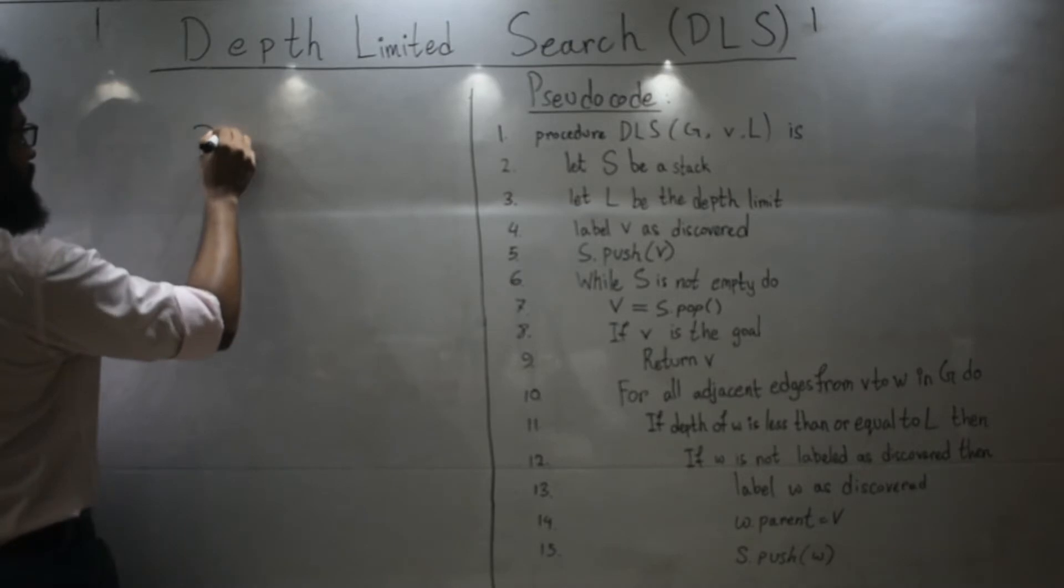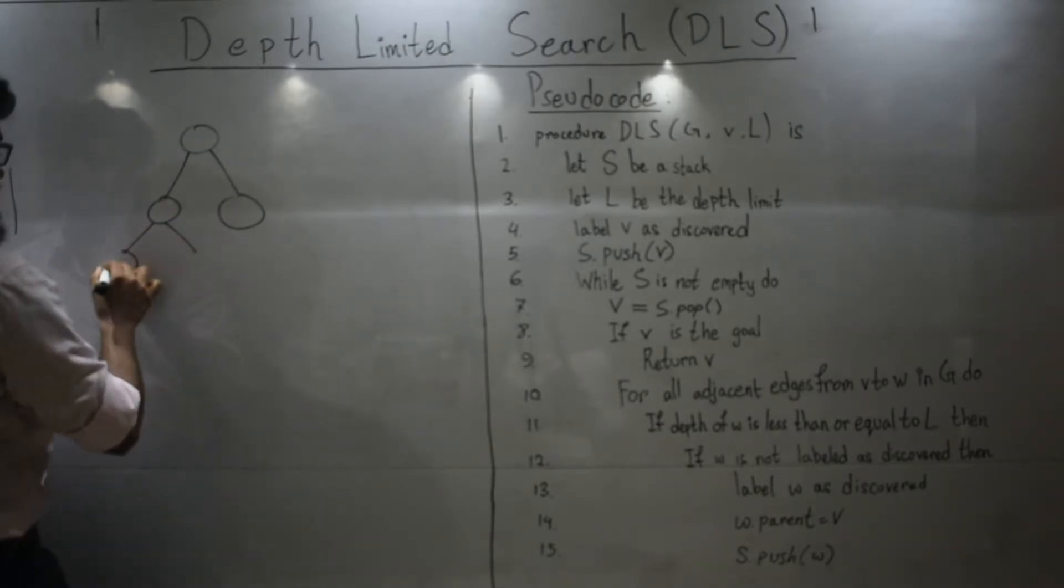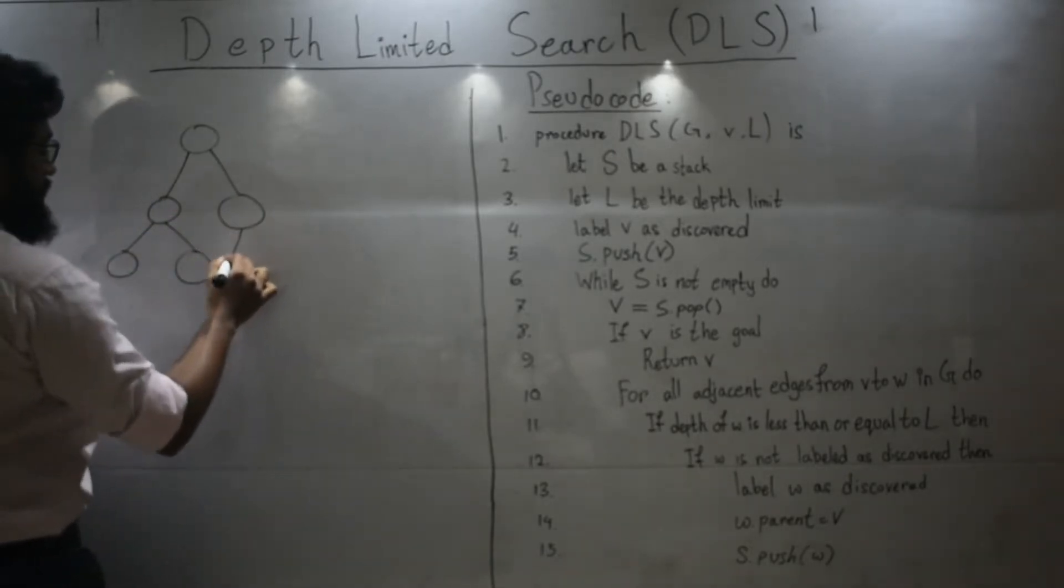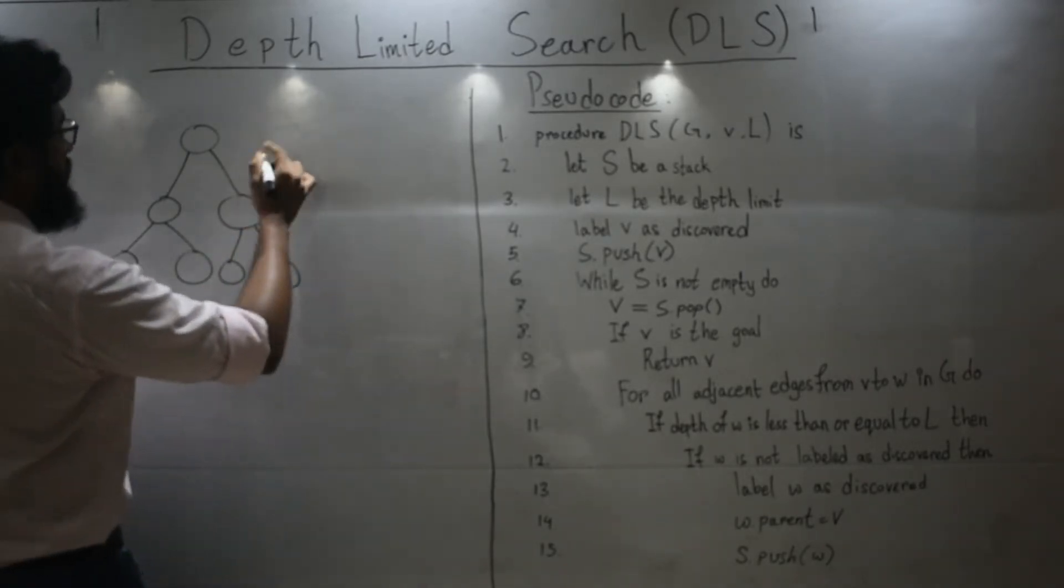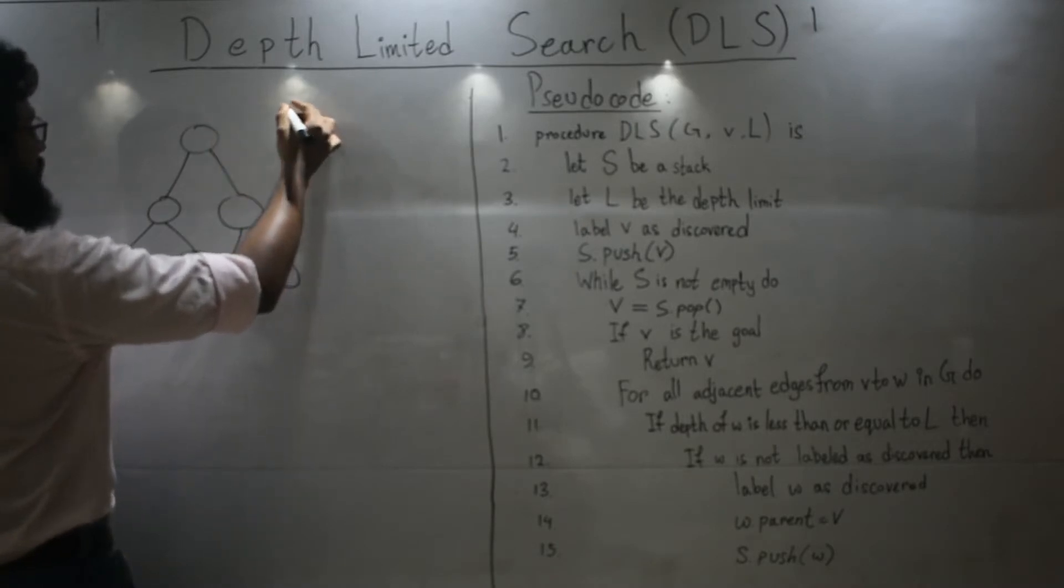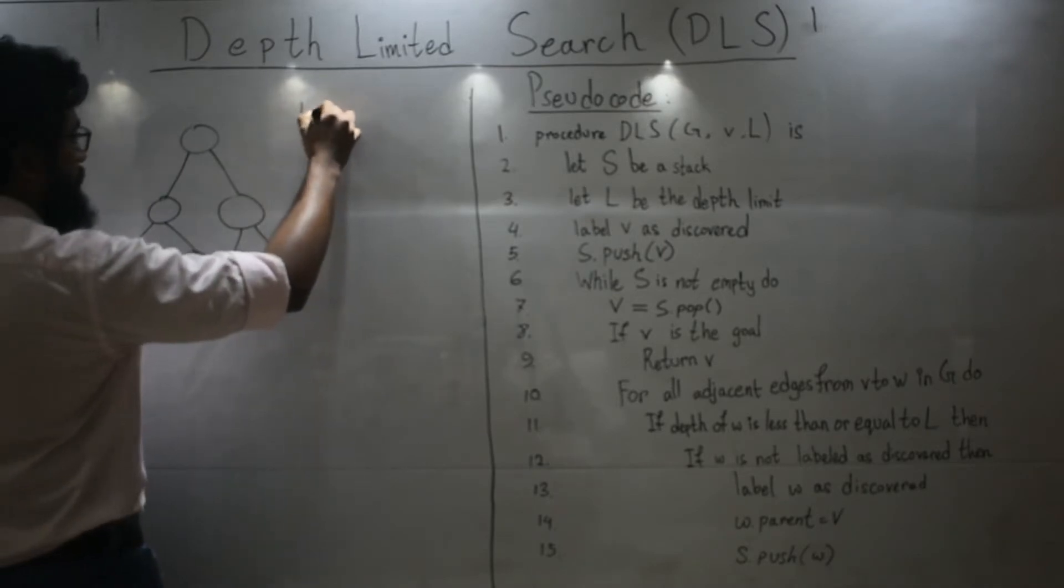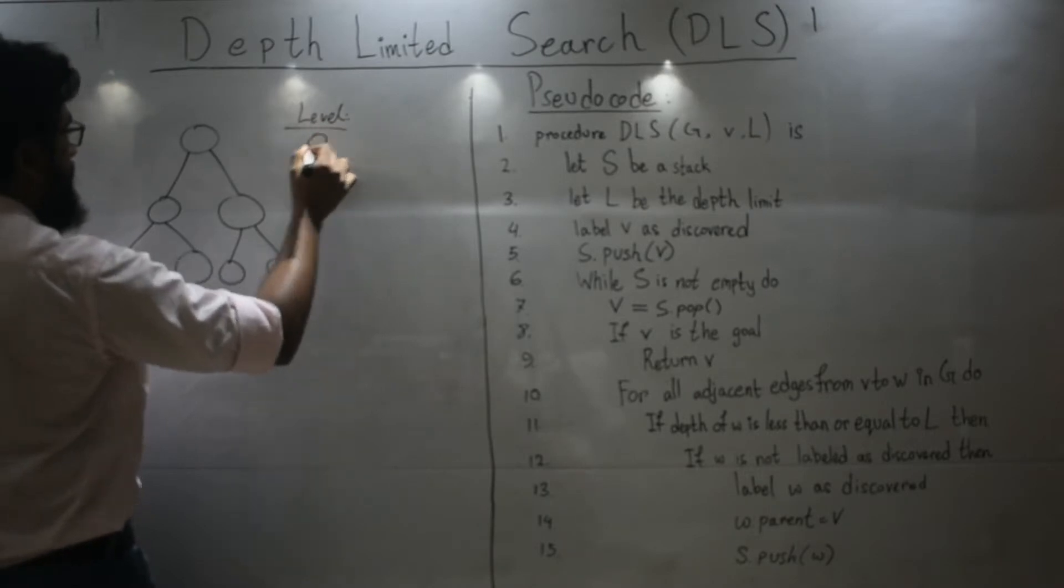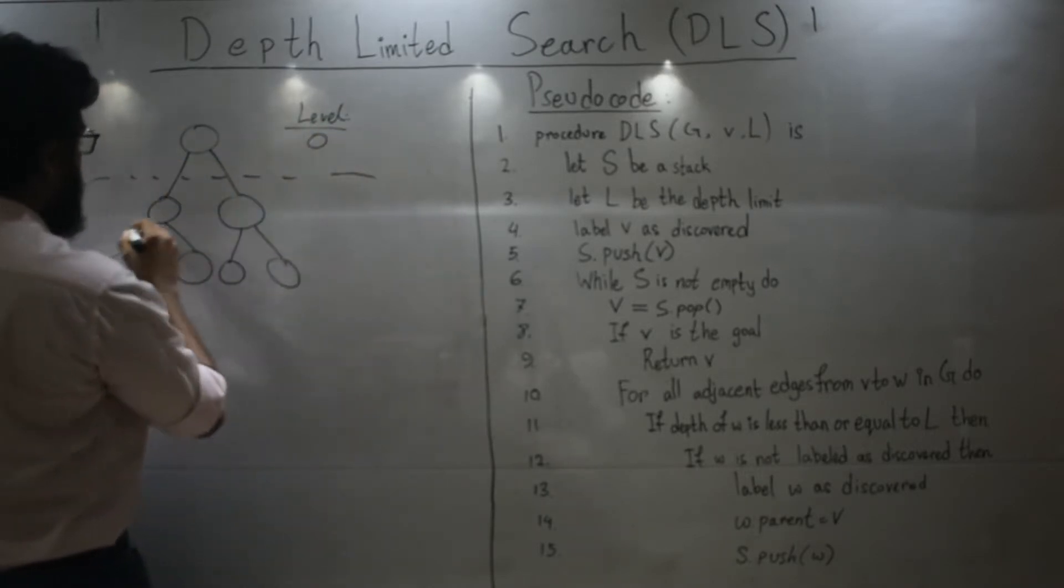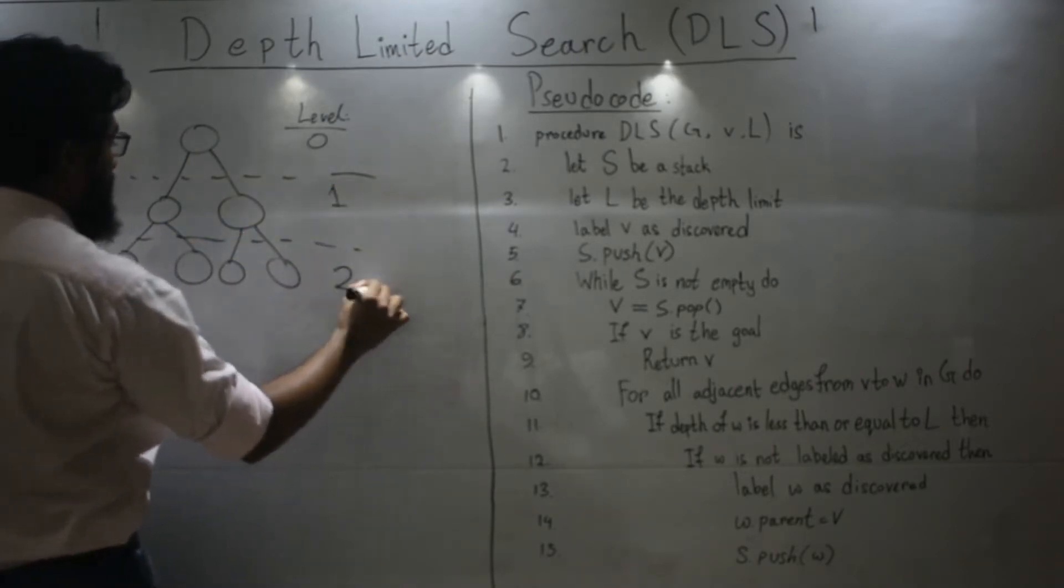So let's see. Suppose you have this tree. Now, the limit or the level of this tree is, this is zero, this is one, this is two.